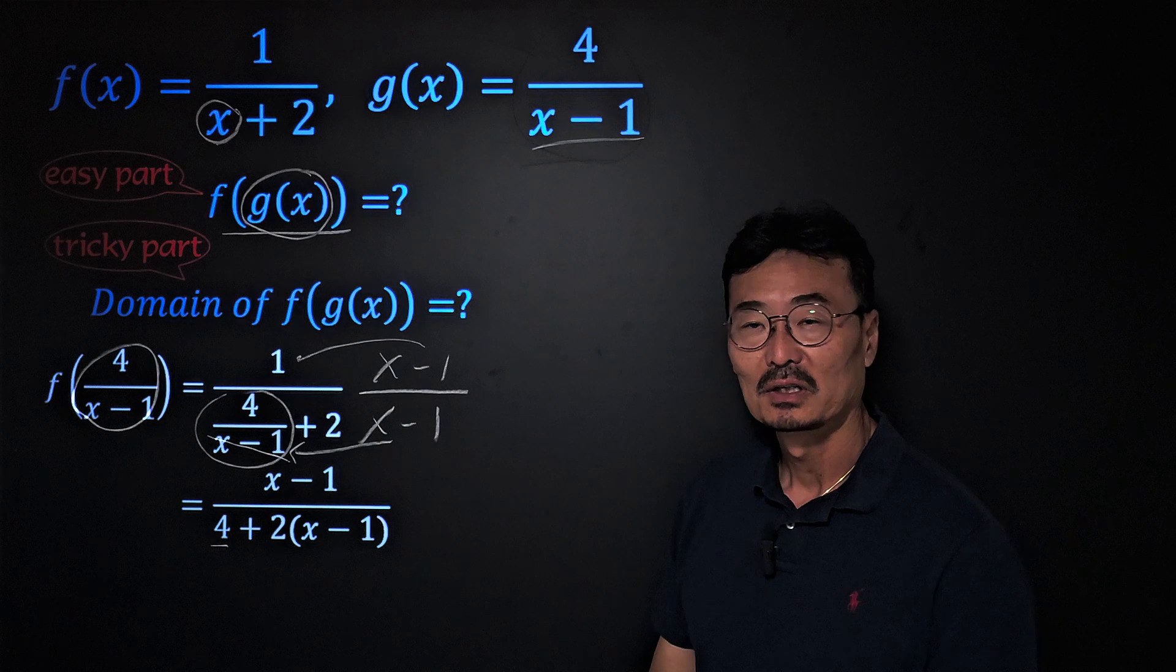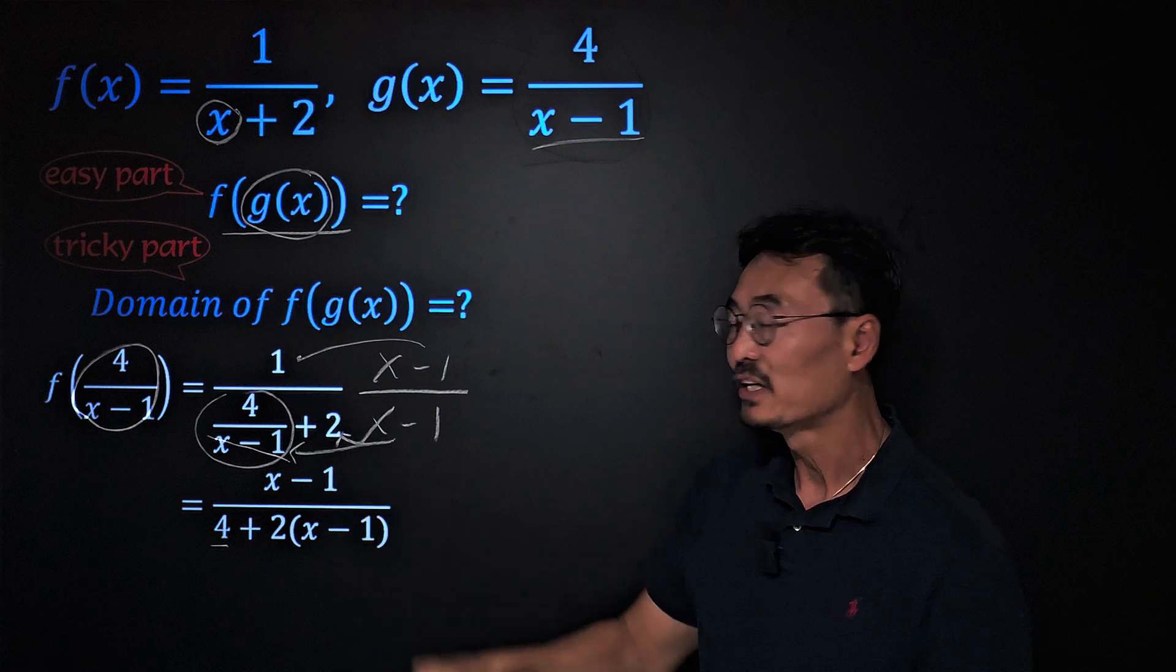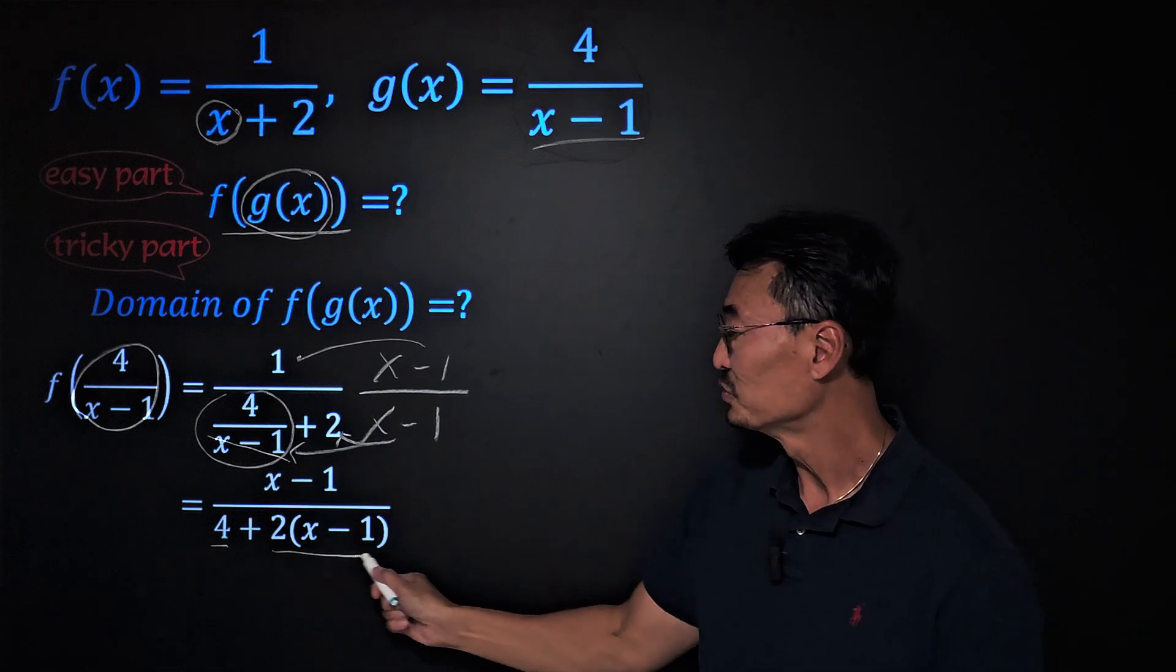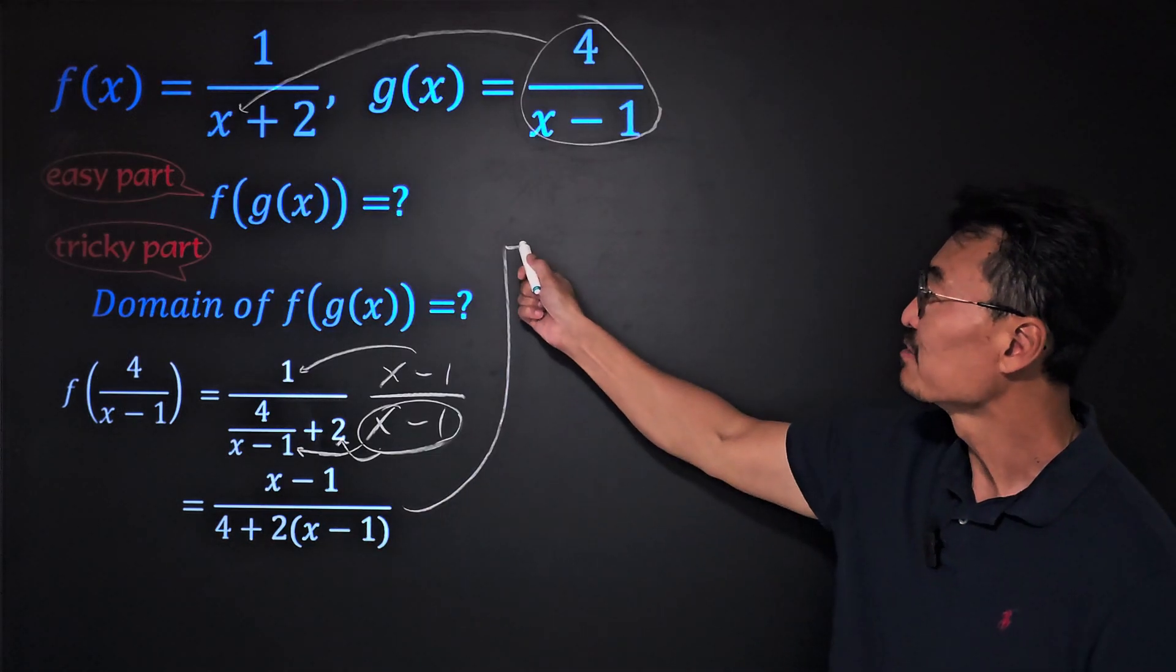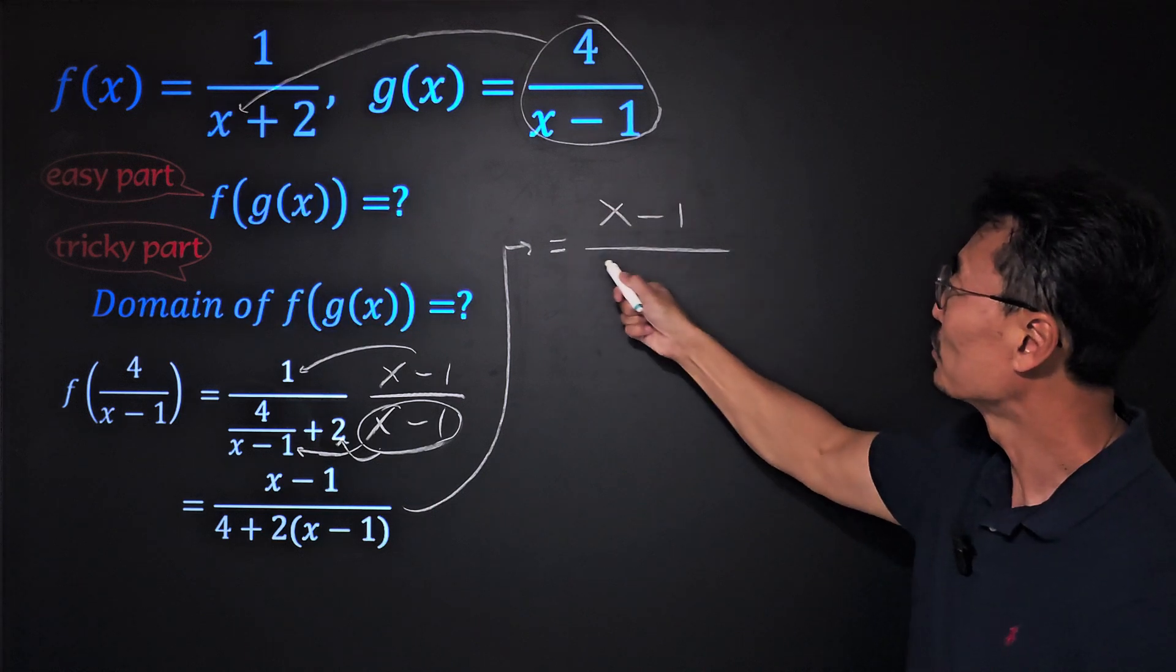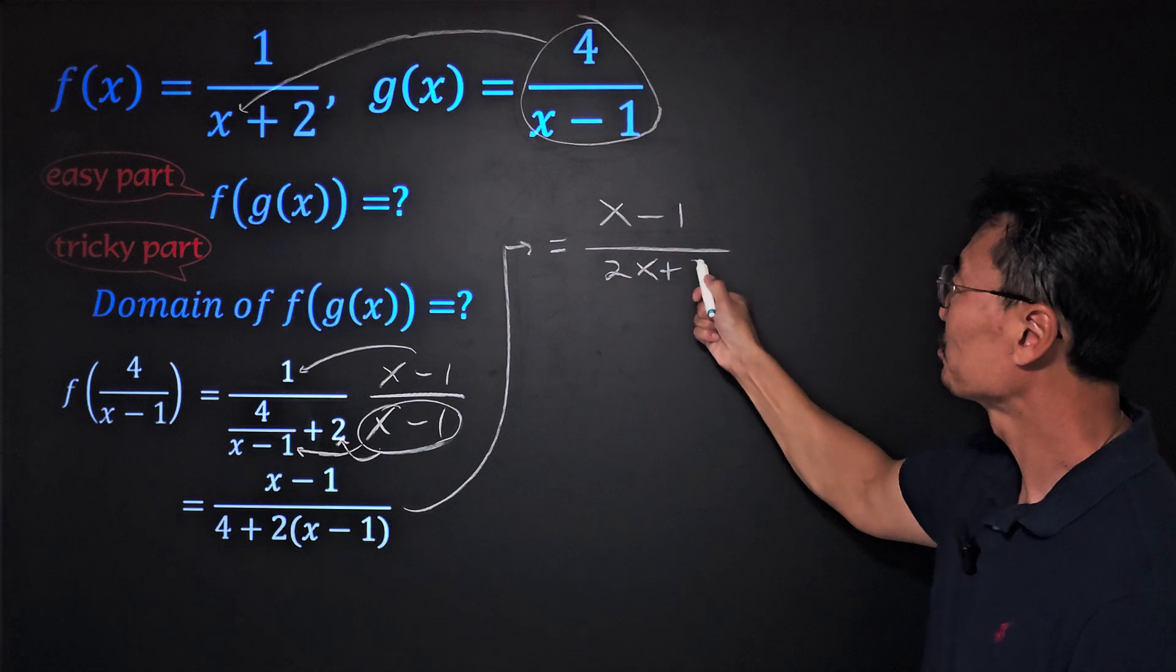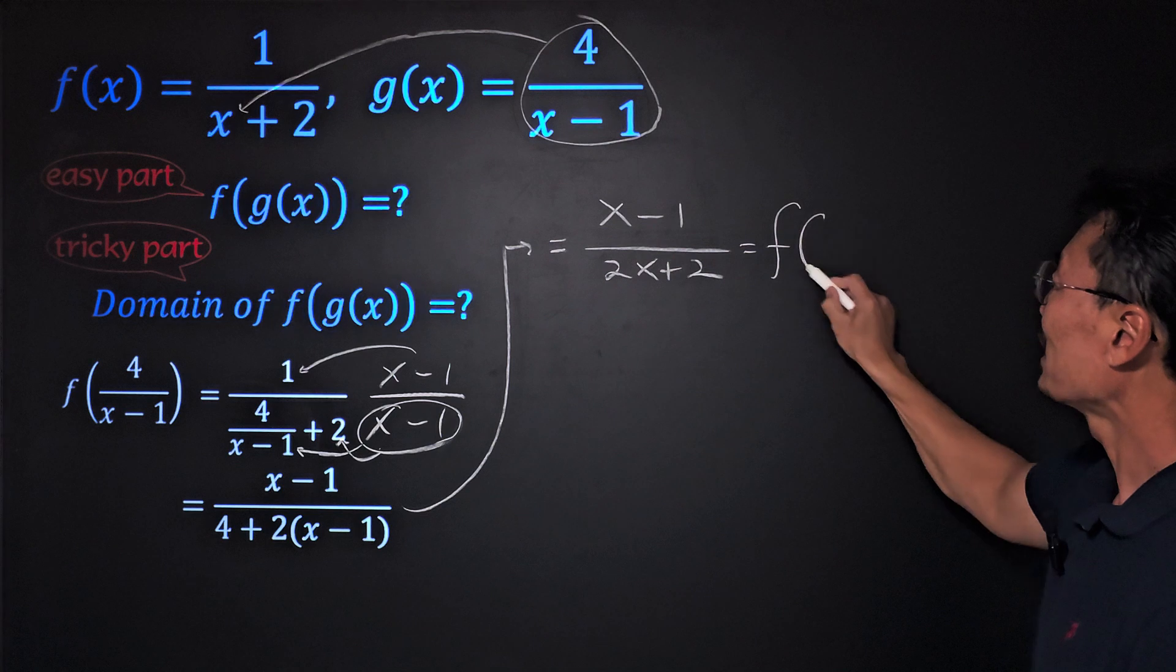Then we could take that (x-1) and multiply to the 2 as well, where we end up with 2(x-1). If we simplify, it's going to be (x-1) over 4 + 2(x-1). There you have it, that's our f(g(x)) function.